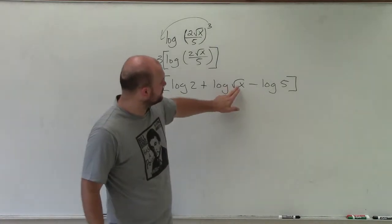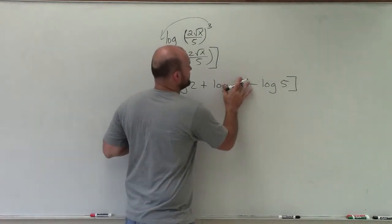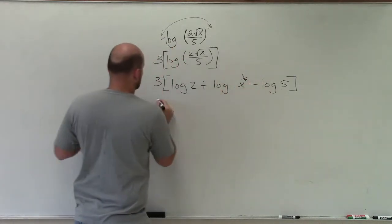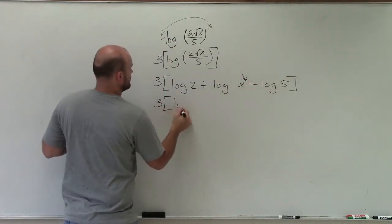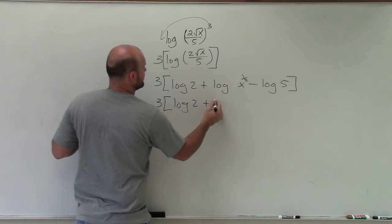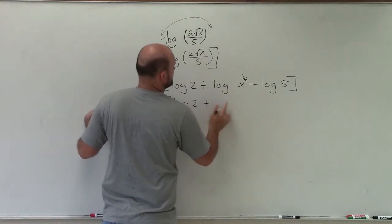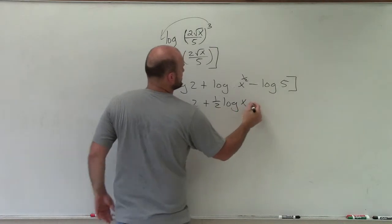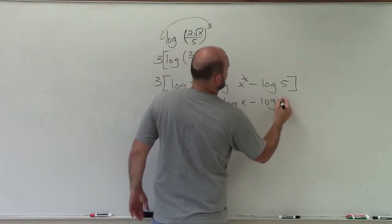Then I notice that this square root can be rewritten as 1 half, which I can bring in front. So I have 3 log base 2 plus, oops, bring the 1 half in front, 1 half log of x minus log of 5.